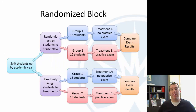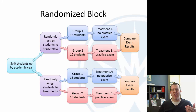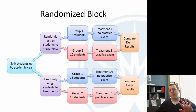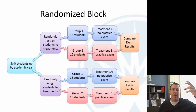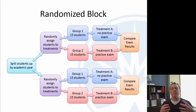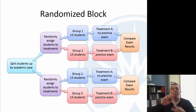A randomized block is basically very similar — think of it like stratified sampling. Say you think the practice exam is going to be more beneficial for new students than for second-year students. So you might split up and have brand new first-year students split into two groups, and then second-year-and-beyond students split into two groups, and then compare the results after the fact. That's a randomized block, where you have some characteristic you think might affect the results and you split the individuals up based on that characteristic.